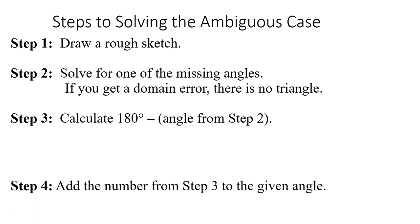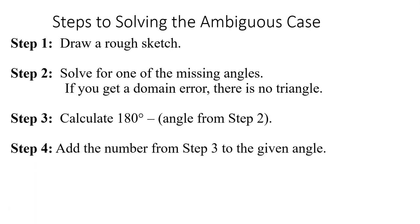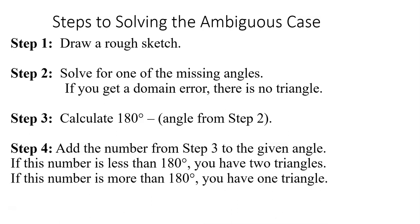Calculate 180 minus the angle and then see if you can add that to the angle that you already have and figure out whether it's more or less than 180. So if you like a flow chart, here's a flow chart. If your number is less than 180, you've got two triangles. Otherwise you only have one. And then solve for the remaining sides. So sometimes you will get two sets of sides and angles, depending on whether you have one triangle or two triangles.